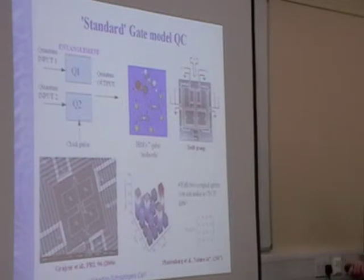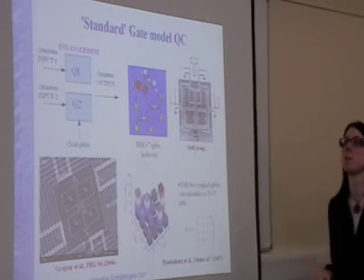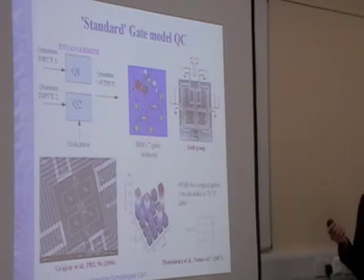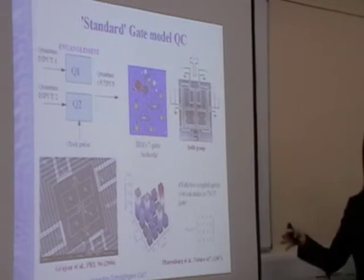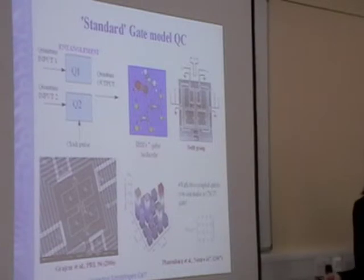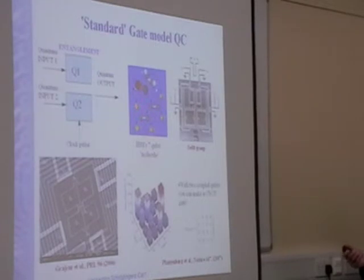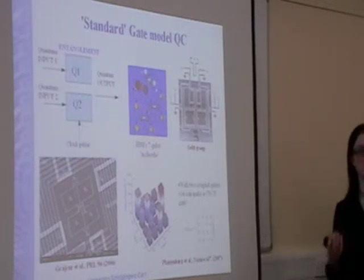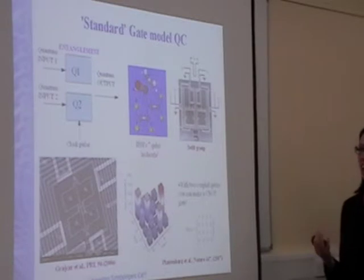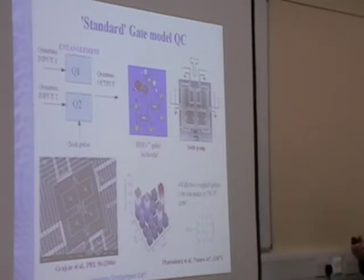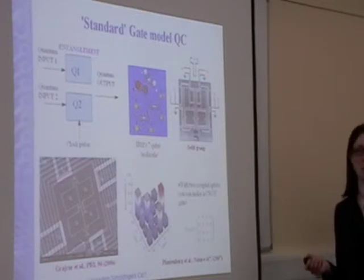That's just one molecule. But in order to actually read out the system, you need a large ensemble of these, and you just hope that they're all doing the same thing at the same time. So really, you're looking at the quantumness of single spins, but because they all do the same thing, you're actually taking an average. Some people actually think that this isn't true quantum computing, because you're looking at a large number of systems.